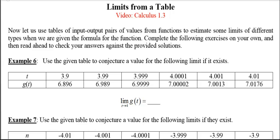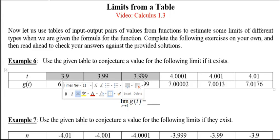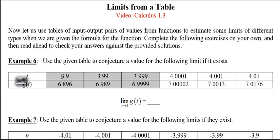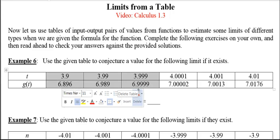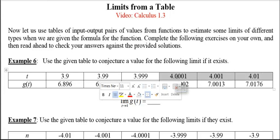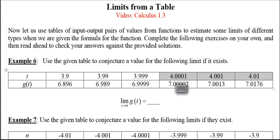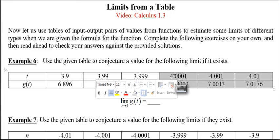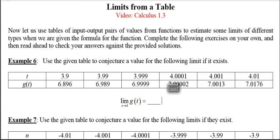First, we start with Example 6. We have ordered pairs in our table: t and g of t. The t values in the left part of the table are lower than 4 — to the left of 4 on the number line — but getting closer to 4 as we go from left to right. That part of the table and the corresponding g values would be investigating a limit from the left. The right part of the table has values greater than 4 getting closer and closer to 4, investigating the limit from the right.